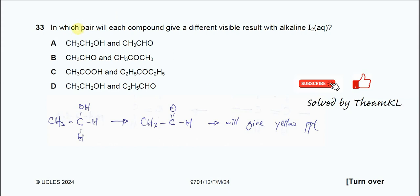Question 33: In which pair will each compound give a different visible result with alkaline iodine solution? This is the iodoform test. If there is a methyl ketone group, it will form a yellow precipitate, which is iodoform (CHI₃). So when there is a methyl ketone group, it will give a yellow precipitate.